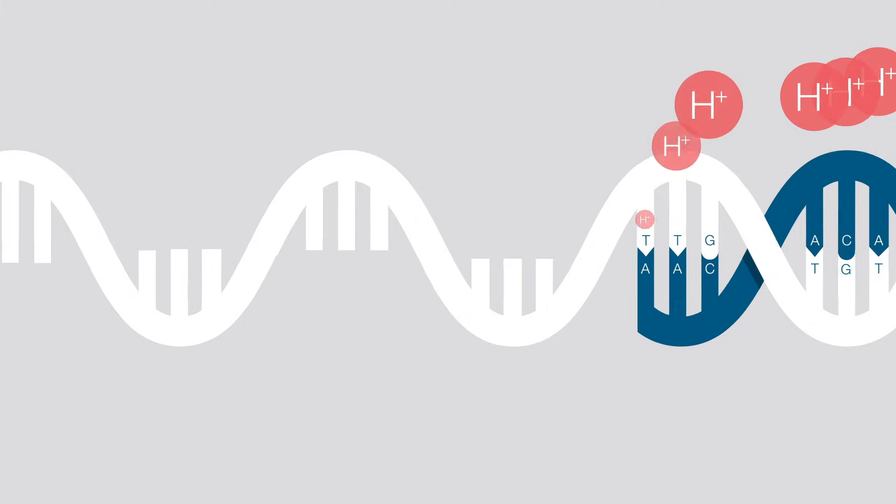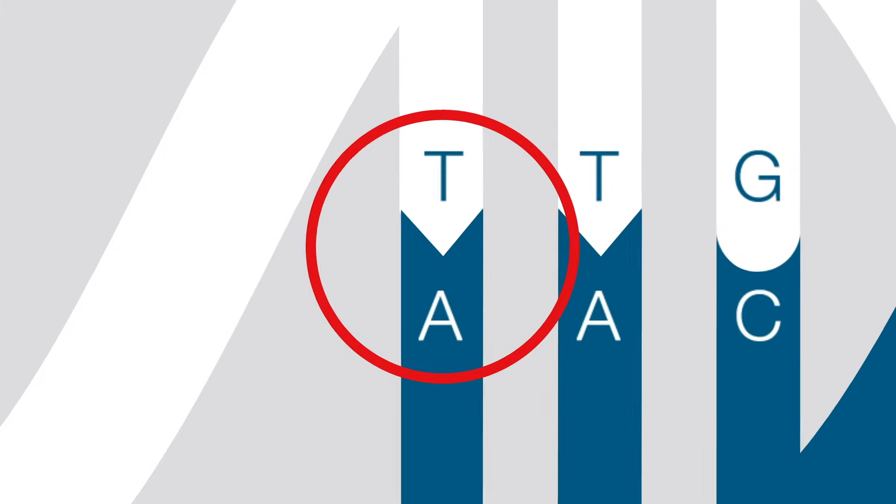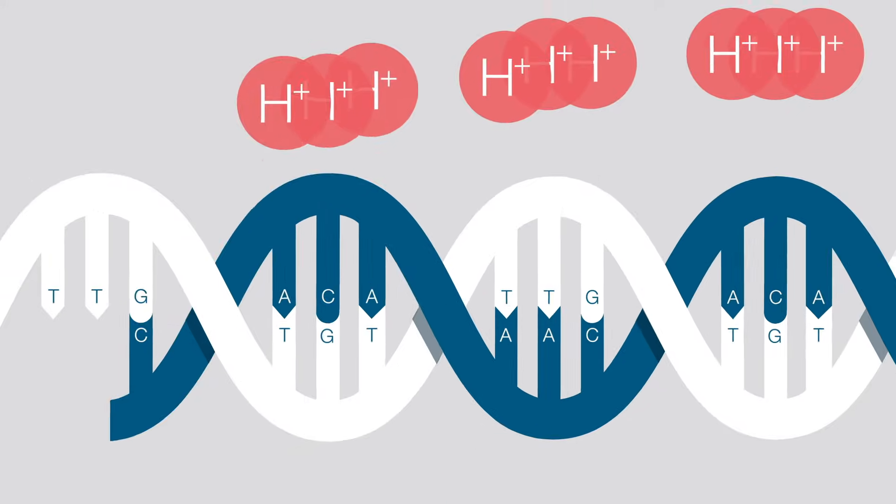Whenever a nucleotide is incorporated into a single strand of DNA, a hydrogen ion is released. This is how the Ion Torrent system sequences DNA.